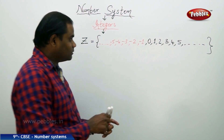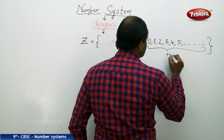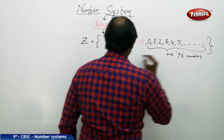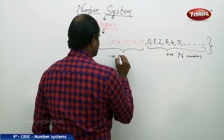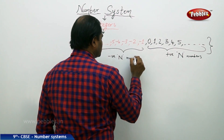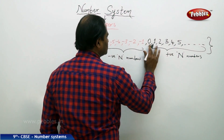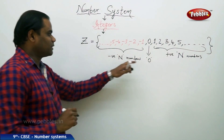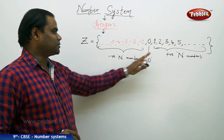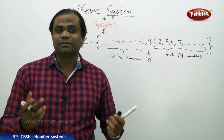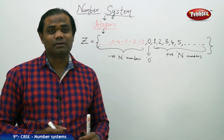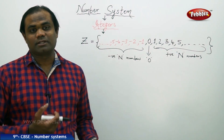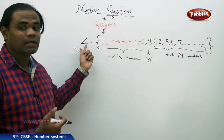So positive natural numbers plus 0 plus negative natural numbers together make the set of integers. This is how we understand the difference between the natural numbers, the whole numbers, and the integers — the set of integers being denoted by capital Z.